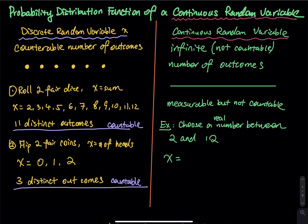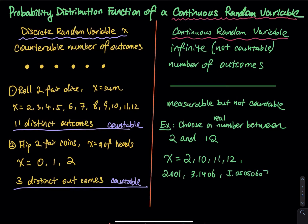For example, we choose a real number between 2 and 12. How many distinct outcomes are there? The answer is infinitely many. Of course, you can include numbers like 2, 10, 11, 12, but also numbers like 2.001, 3.1406, 5.050607, and so on. As long as you include those decimals, the number of outcomes is infinitely many.